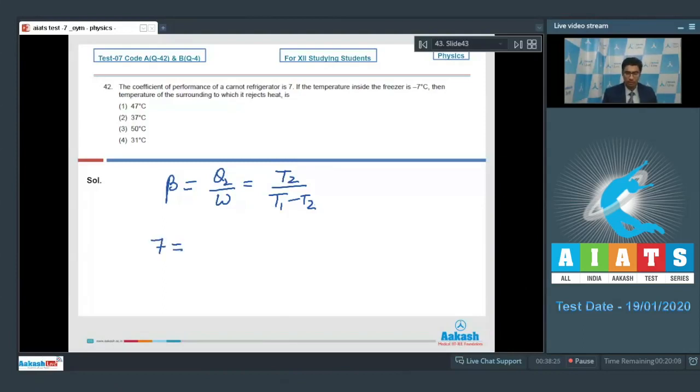Therefore, we can write that 7 will be equal to 266 Kelvin, that is we have converted minus 7 degrees Celsius to Kelvin, which will be equal to 266 Kelvin divided by T minus 266. This will be, on solving this expression,